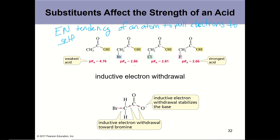Having a weaker bond to an acid proton means that it is a stronger acid. The acid with the most electronegative atom is going to cause the acid proton to be the most acidic. This only occurs when the electronegative atom is not bonded to the acidic proton — and we call that a substituent. If it's not actually bonded to the acidic proton, it is a substituent.